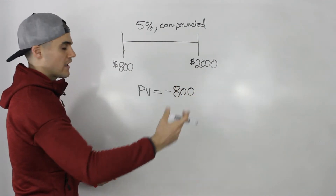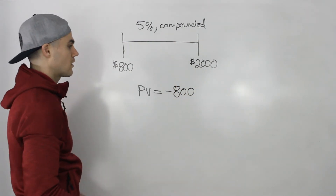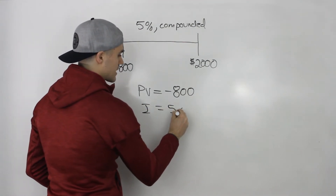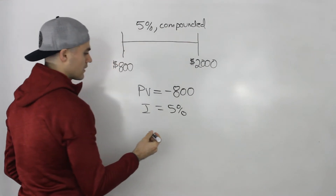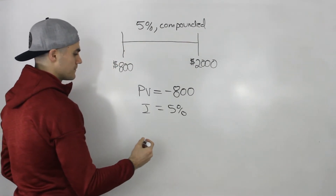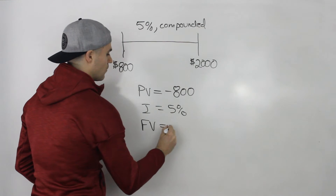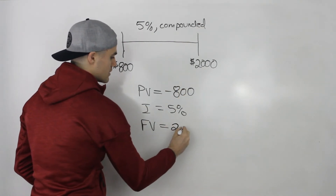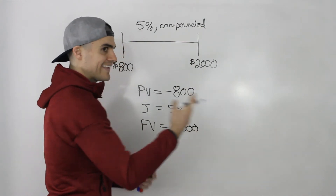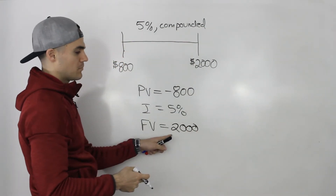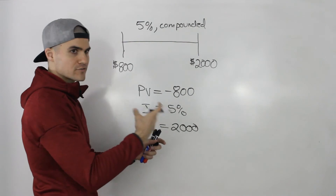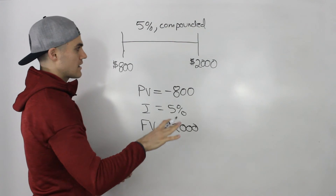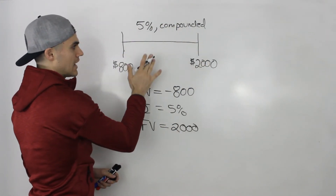Initially, we have to give $800 — we are investing that at 5% every year, so that's going to be our I. The future value — we have to get to $2,000, and because we are going to receive that money from our investment, that's going to be a positive cash flow. Even though after we get it we're going to spend it on the stereo, spending it on the stereo is not part of this timeline.